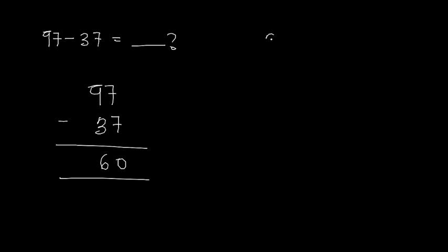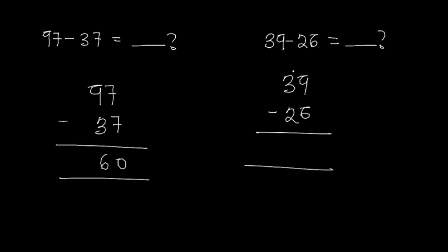Let's have a look at another example: we have 39 minus 26. I write down my first number 39, bring my subtraction sign, and have 26. As usual, I subtract the ones first — 9 minus 6 gives us 3. Now we move on to the tens: 3 minus 2 gives us 1. So 39 minus 26 gives us 13.